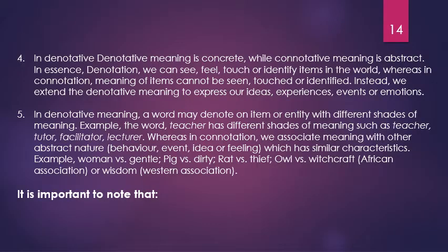Number four: in denotative meaning, meaning is concrete, while connotative meaning is abstract. That is, denotative meanings refer to something we can see, feel, touch, or identify in the physical world. Whereas connotation — the connotative meaning of an item cannot be seen or touched or identified. Instead, we extend the meaning. For example, if you say 'he is a donkey', we can see a donkey — a donkey is an animal. But calling a person a donkey is not something you see in their physical appearance; you see it maybe in their attitude, which resembles something closer to that of a donkey.